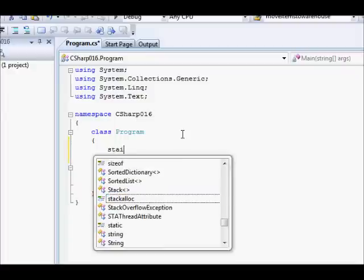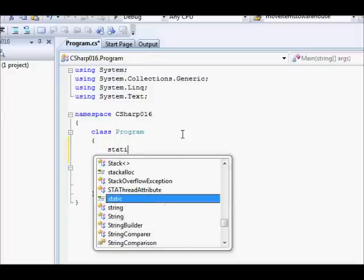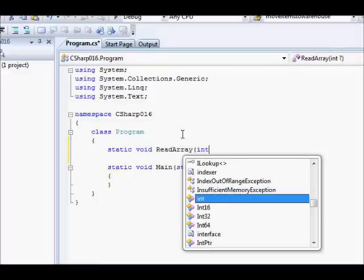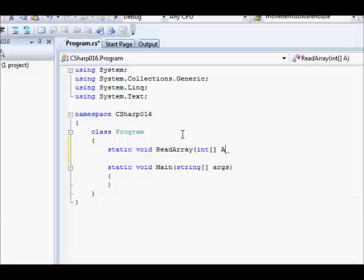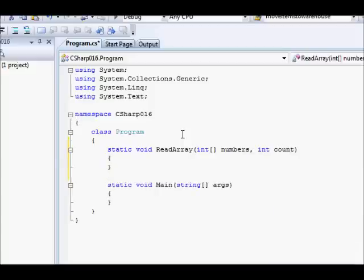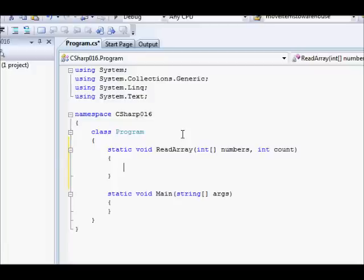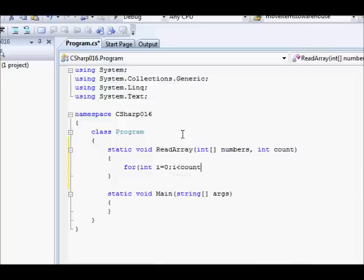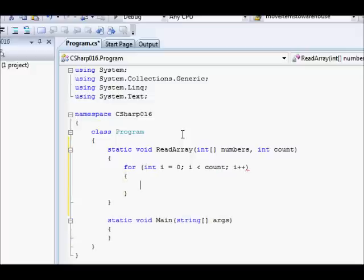So here we have static void ReadArray. And now I am going to say here int, I am going to say numbers and count. So what are we going to do here? We are going to say for int i equals zero, i smaller than count i plus plus.